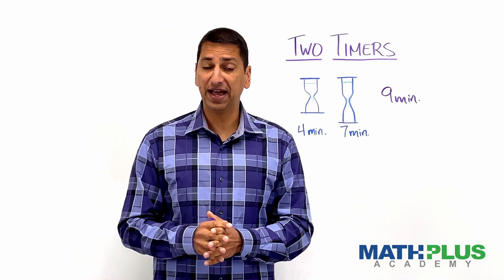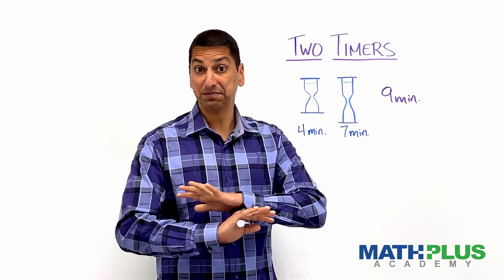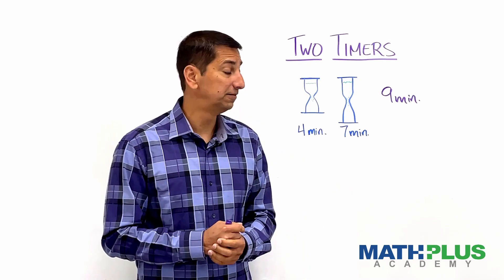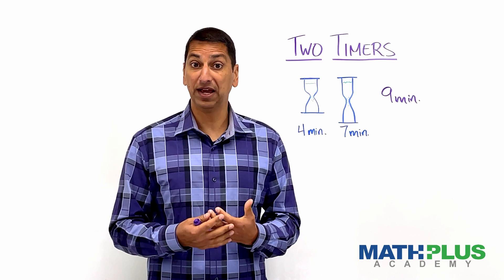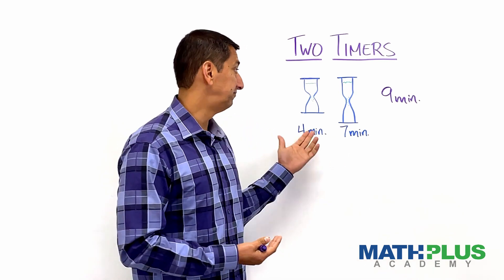If you can figure that out, or if you can figure out that it's impossible, whichever one it is, then also think about what are all the possible times that you could measure with a four and a seven.